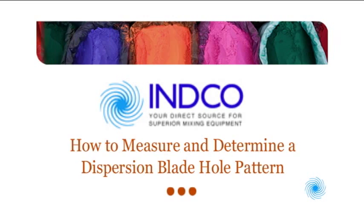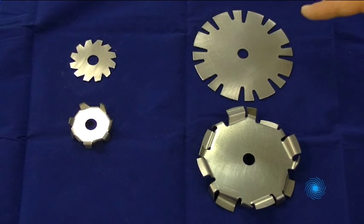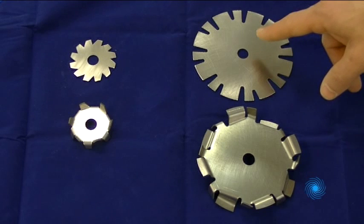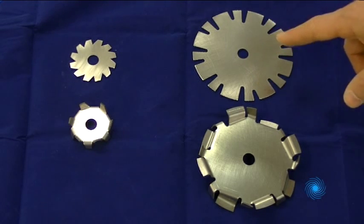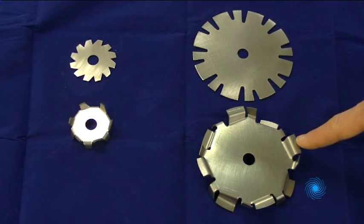ENCO presents a video guide to measuring and specifying dispersion blade hole patterns. Standard dispersion blades are laser cut from stainless steel, include a center hole, and are formed at the time of order.